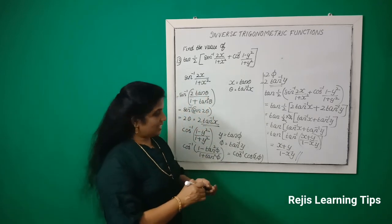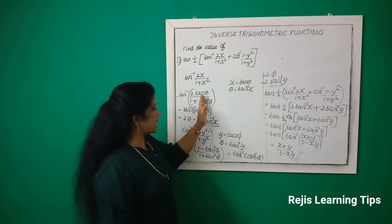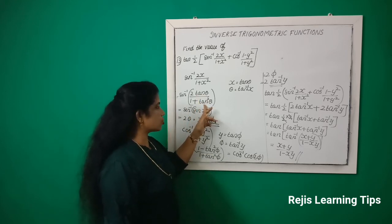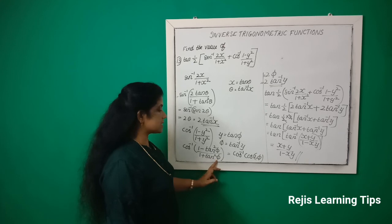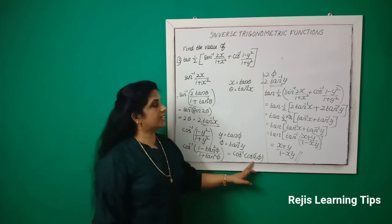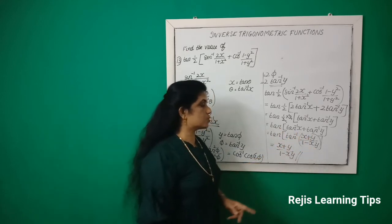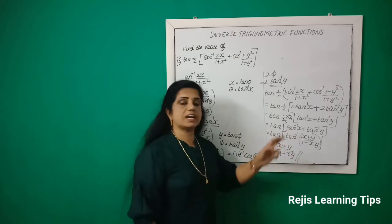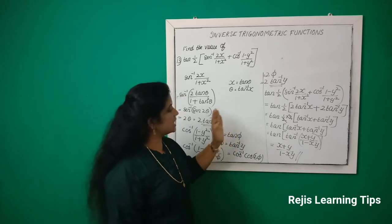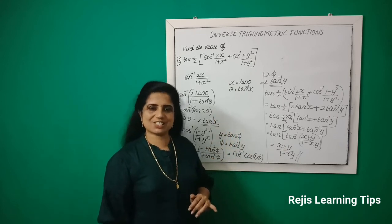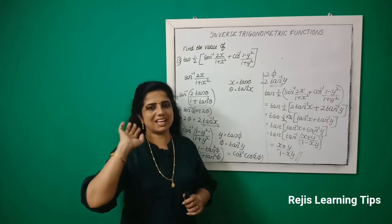So the final answer is (x+y)/(1−xy). The formula tan inverse x + tan inverse y = tan inverse ((x+y)/(1−xy)) is used here. Okay, study up to here; the remaining problems we will discuss in the next class. Until then, bye bye.